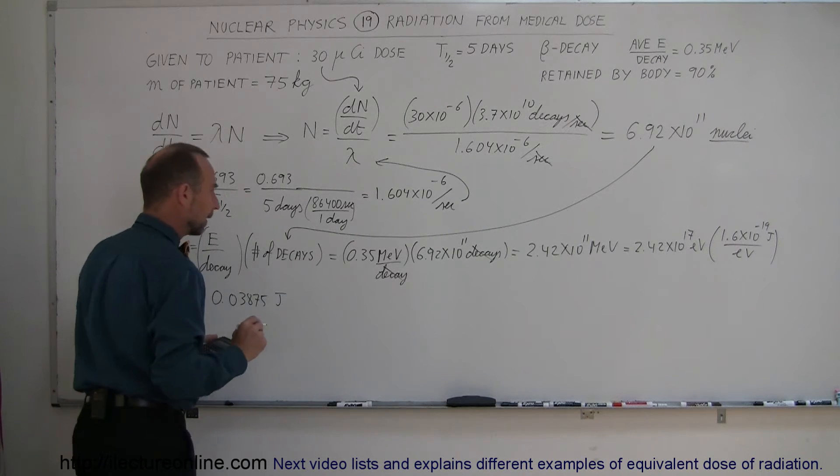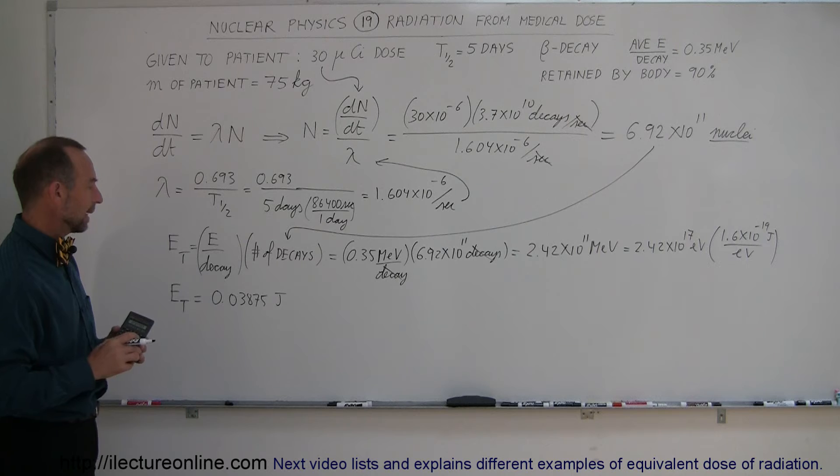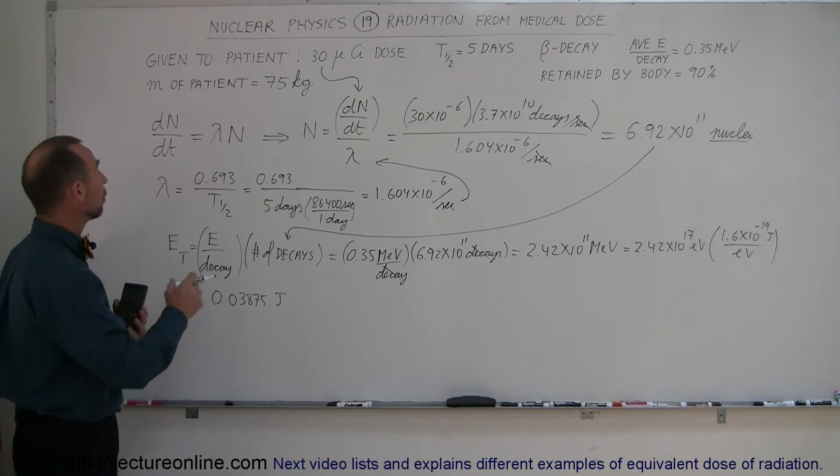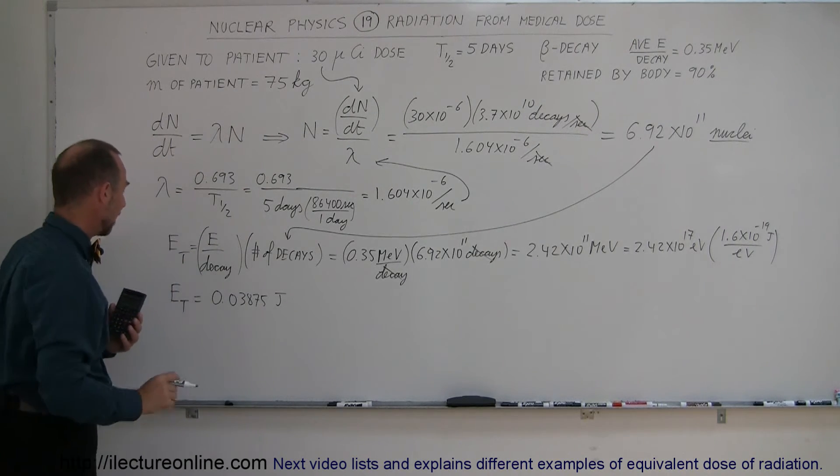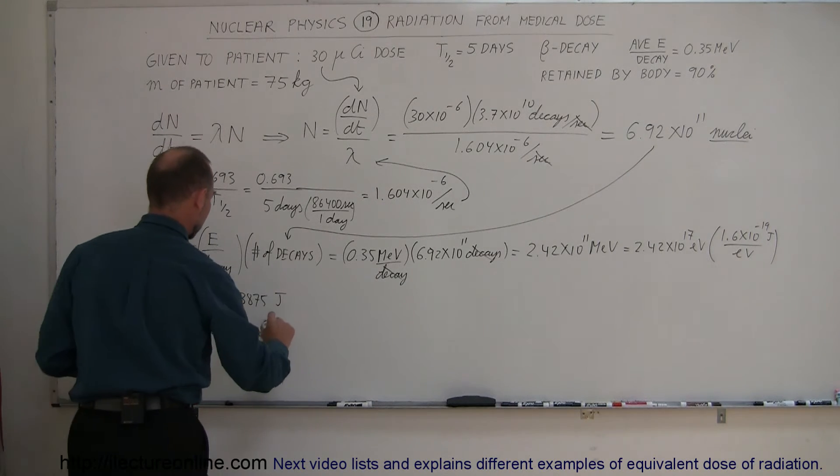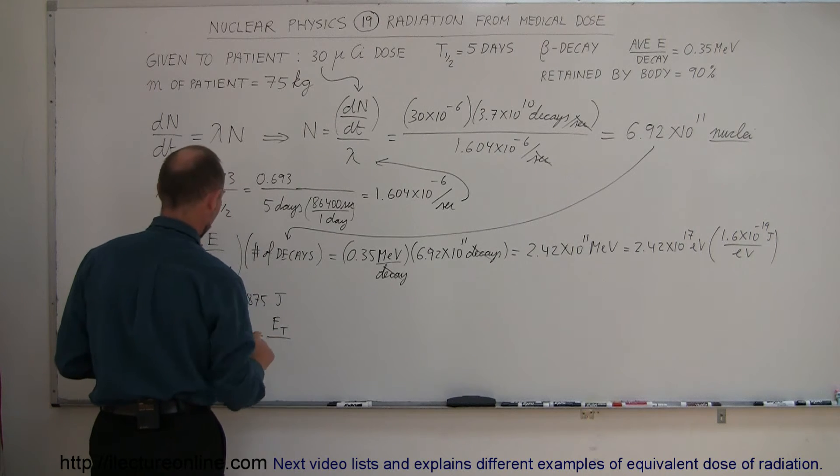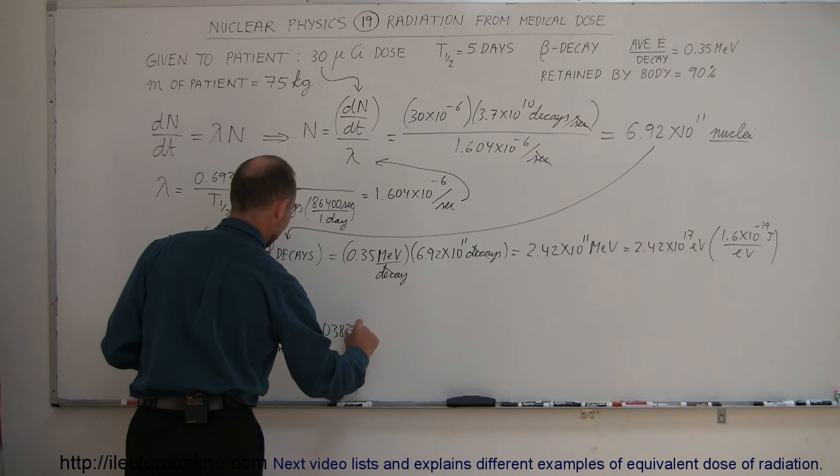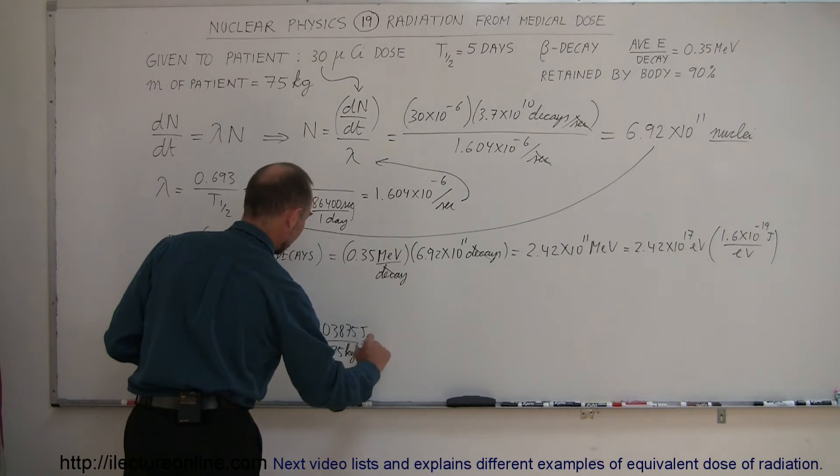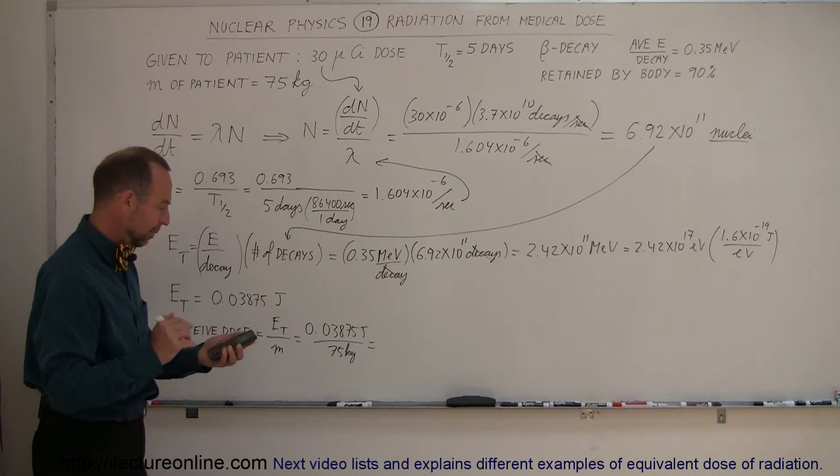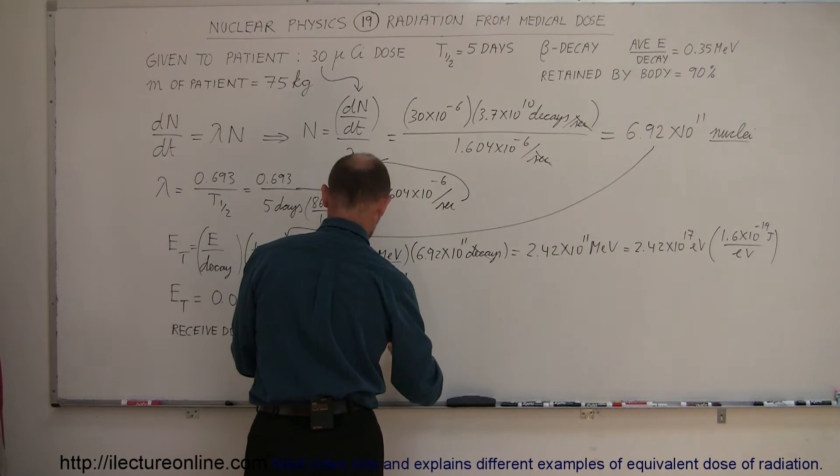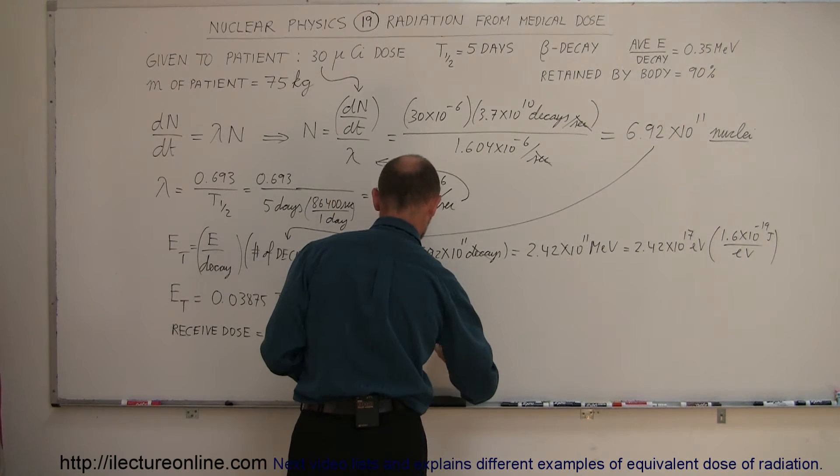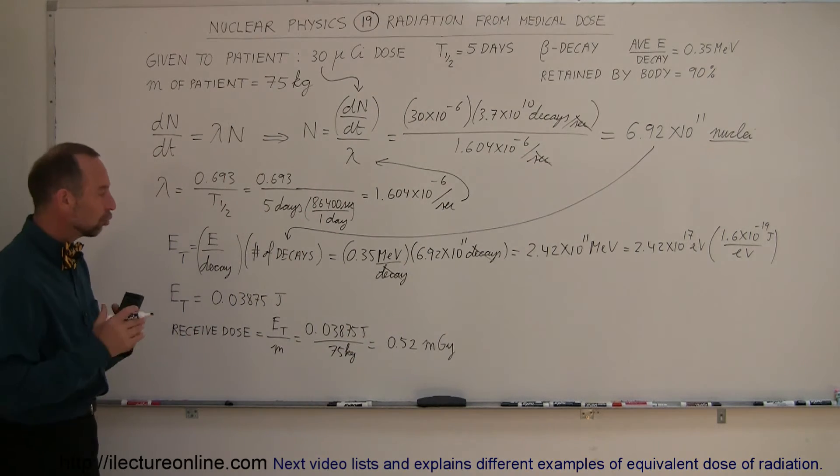Energy total. Okay, is that the received dose? Well, it is for the whole body, but since the dose that a body receives has to be per kilogram of body tissue, we'll have to divide by 75. And then the received dose is equal to the total energy that we receive from the medicine divided by the mass of the body. So it would be 0.03875 joules divided by 75 kilograms. And let's see here, divided by 75, and now we have 0.52 milligray.